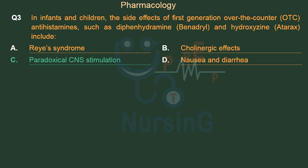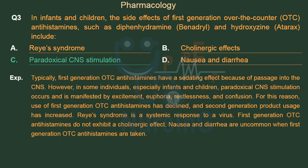Typically, first-generation OTC antihistamines have a sedating effect because of passage into the CNS. However, in some individuals, especially infants and children, paradoxical CNS stimulation occurs and is manifested by excitement, euphoria, restlessness, and confusion. For this reason, use of first-generation OTC antihistamines has declined, and second-generation product usage has increased.